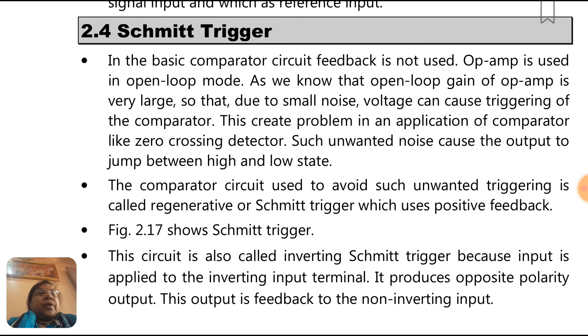Such unwanted noise causes the output to jump between high and low states. The comparator circuit used to avoid such unwanted triggering is called regenerative or Schmidt trigger, which uses positive feedback. This circuit is also called inverting Schmidt trigger because input is applied to the inverting input terminal. It produces opposite polarity output. This output is fed back to the non-inverting input.